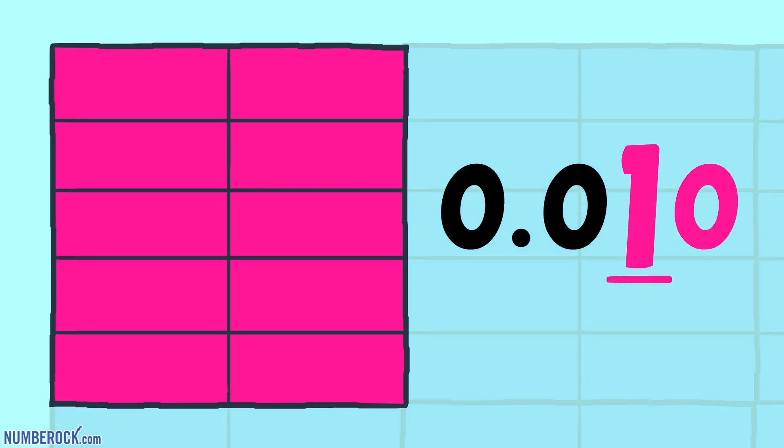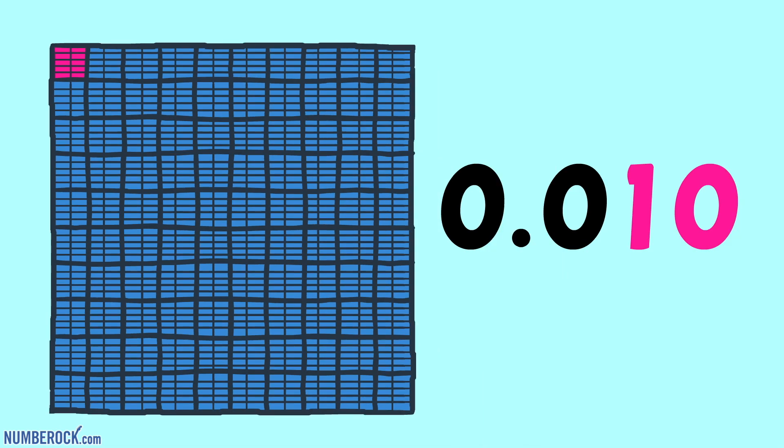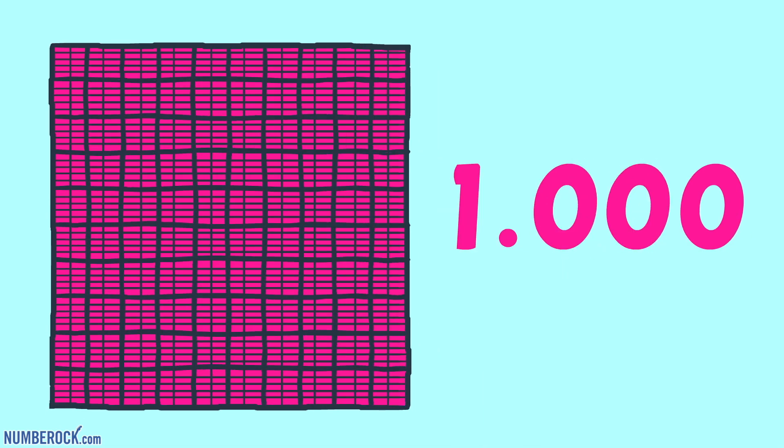We can see ten thousandths and one hundredth are equivalent. And ten hundredths turn into one tenth. And ten tenths make one whole, my friends.